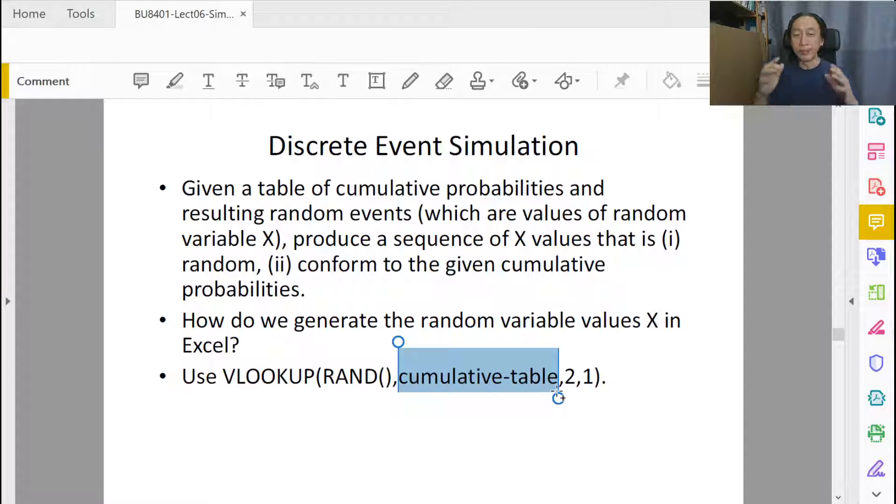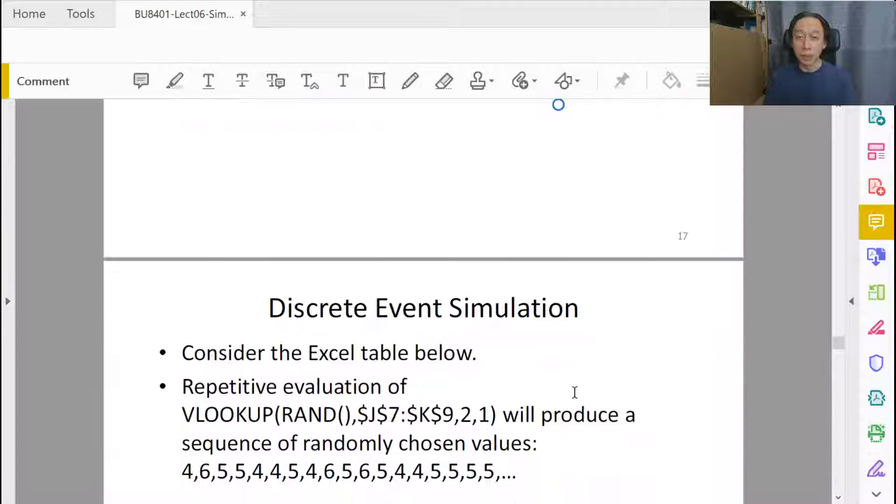The cumulative table here is basically a dictionary that defines our allowed symbols. In my four, five, six example case, that will show four, five, and six and the relevant cumulative probabilities. In the gamer example, the mobile game example, I will have to define the four symbols and their corresponding rate of occurrence in terms of cumulative probabilities. The comma two, comma one will always be fixed so long as you're using VLOOKUP for simulation. We'll look at the details when we flip over to the Excel screen.